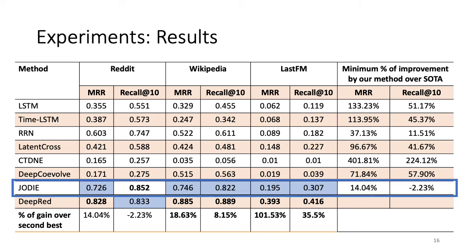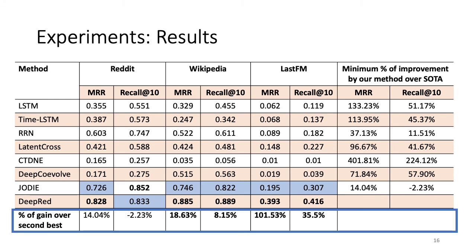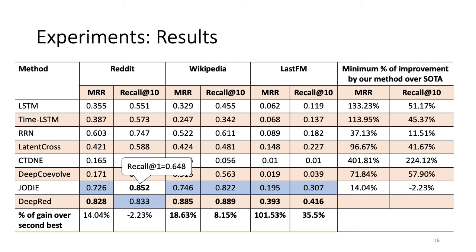The second best algorithm, which is Jodi, is better than DeepRed for Reddit when we look at the recall at 10%. Nonetheless, DeepRed is better for the rest of the cases. In addition, when we look at the recall at 1 for Reddit with respect to Jodi, we see that the performance of Jodi drops significantly from 0.85 to 0.64. Whereas we see that the difference is very small in our case.